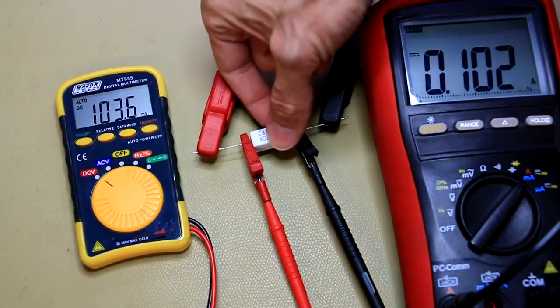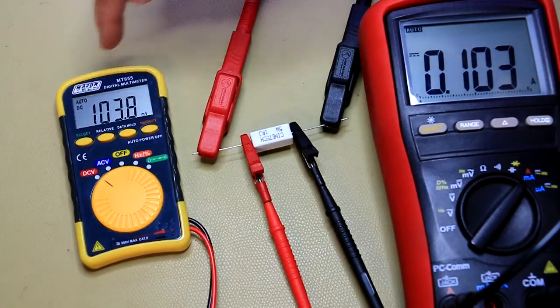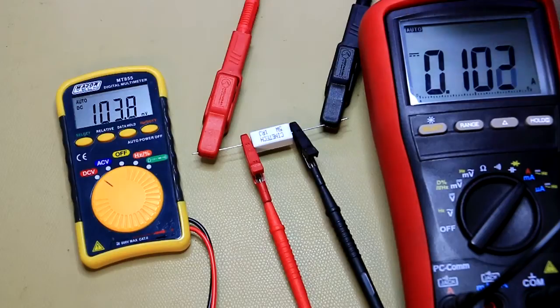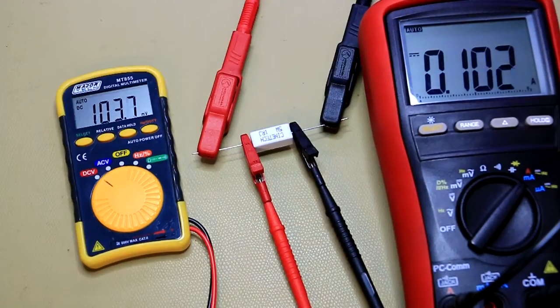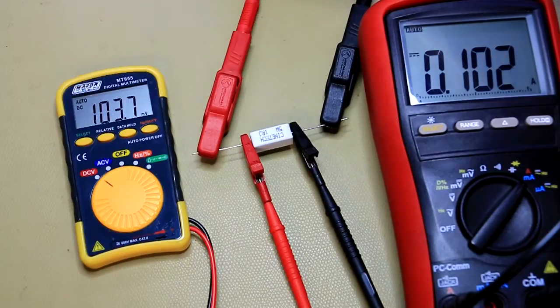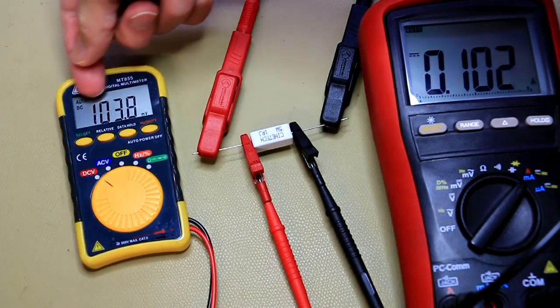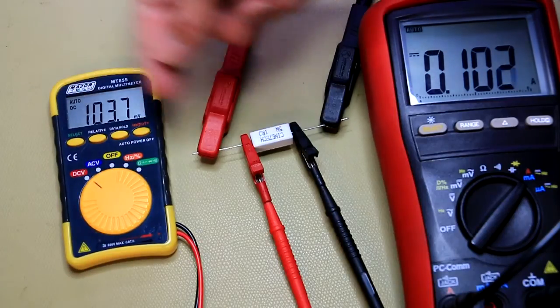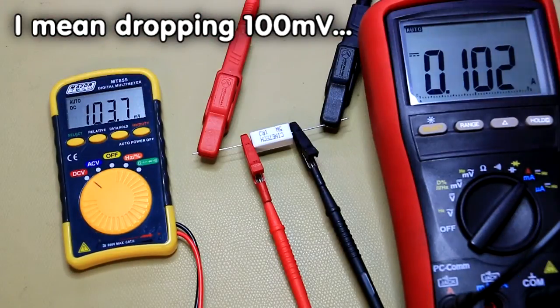And you can see the one ohm resistor in there. It's currently measuring about 103 millivolts, so that equals about 103 milliamps as well. Of course the burden voltage across this resistor is now quite large, so for every 100 milliamps that you are measuring, you're also dropping 100 millivolts over this resistor.